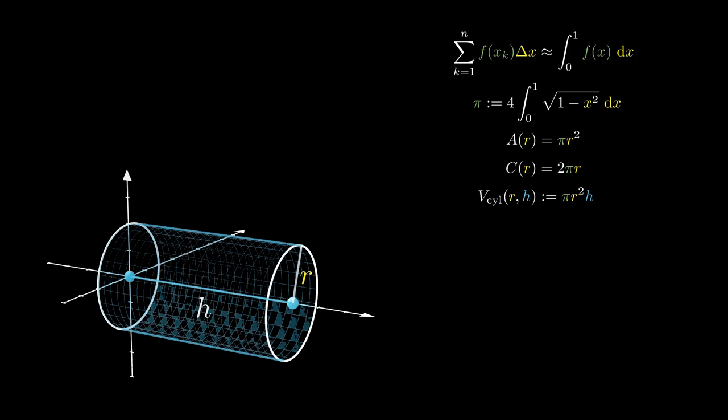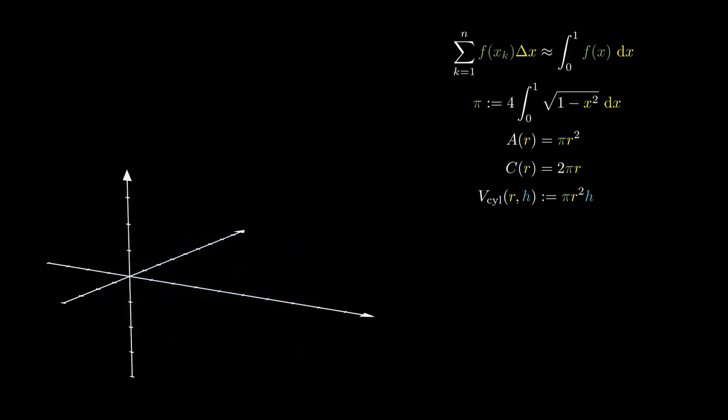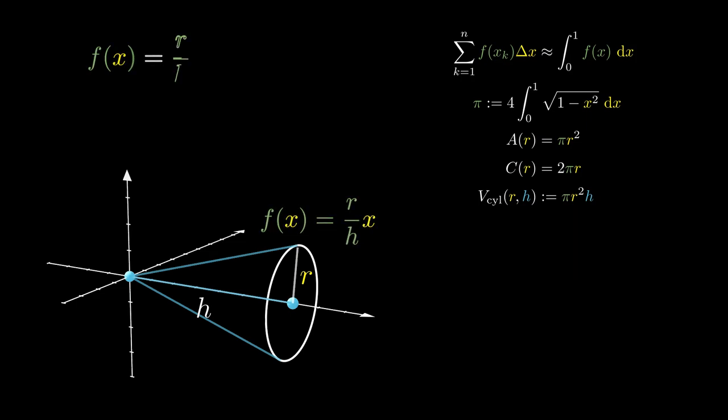If instead, however, our object starts at a single point and slowly increases in the base as we increase the value of x, we obtain a cone with the base radius r and height h. The slanted height is given by an equation, and what we're going to do is add up a bunch of cylinders.